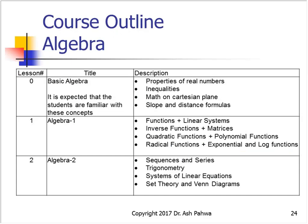This is the outline of the course. Starting from lesson zero, which is the background I would like students to have — basic algebra including properties of real numbers, inequalities, Cartesian plane math, slope and distance formulas. Lesson one covers algebra: functions, linear functions, inverse functions, matrices, quadratic functions, polynomial functions, radical functions, exponential and log functions. We'll also touch on sequences and series, a little bit of trigonometry, systems of linear equations, set theory, and Venn diagrams. This covers the first two lessons.